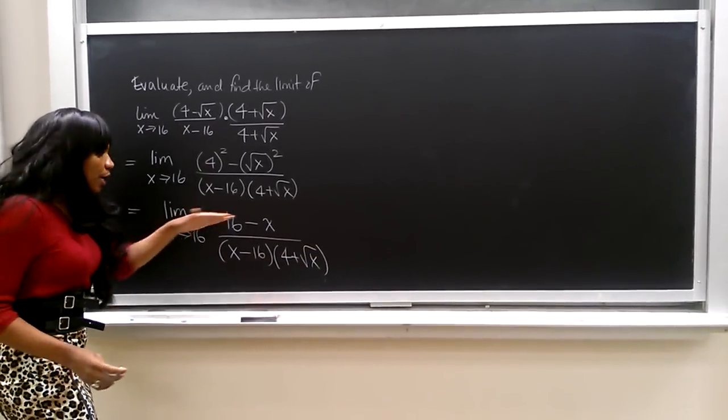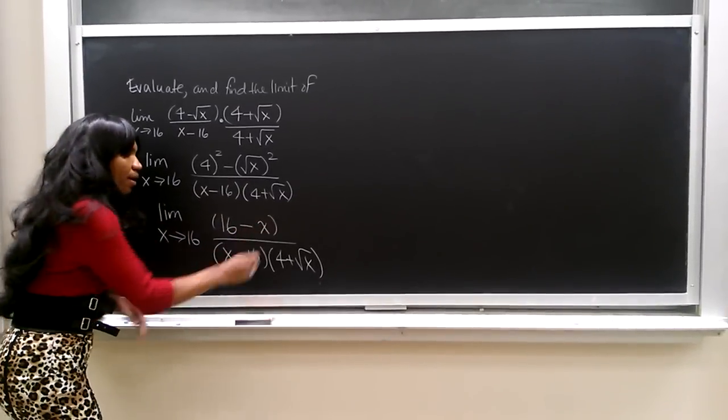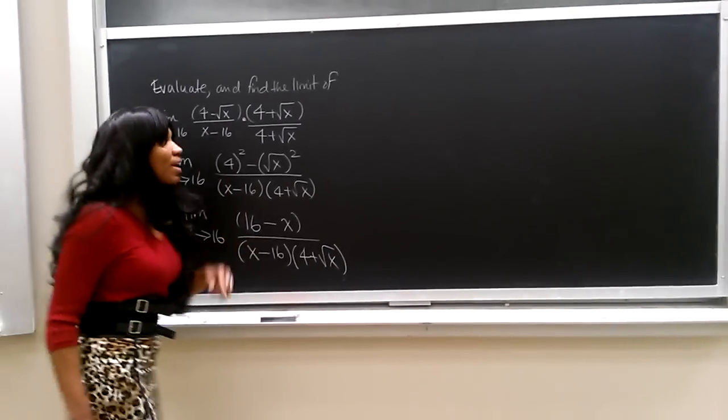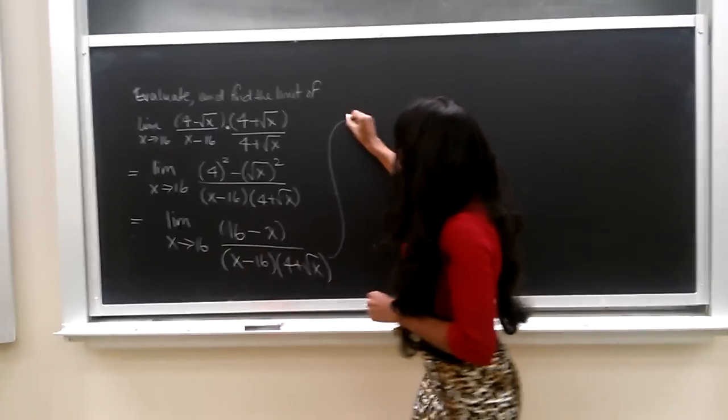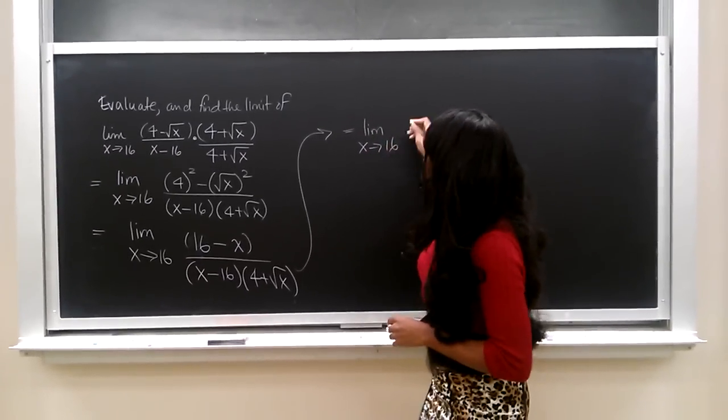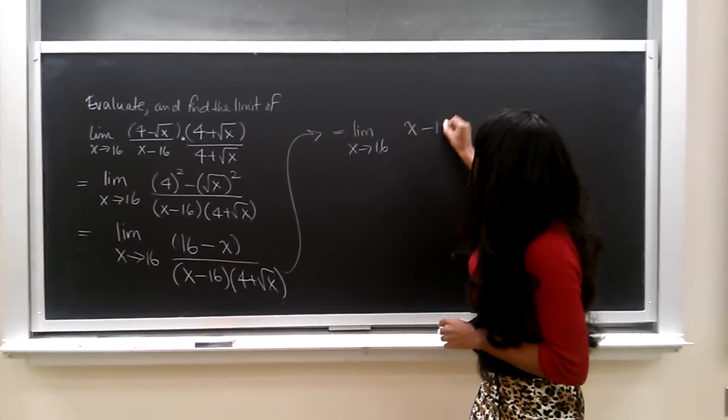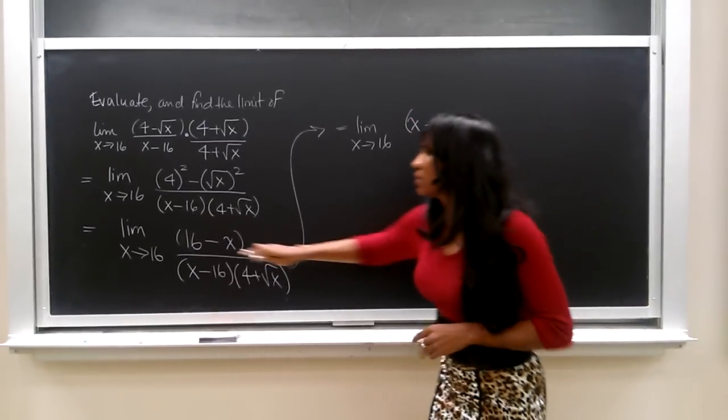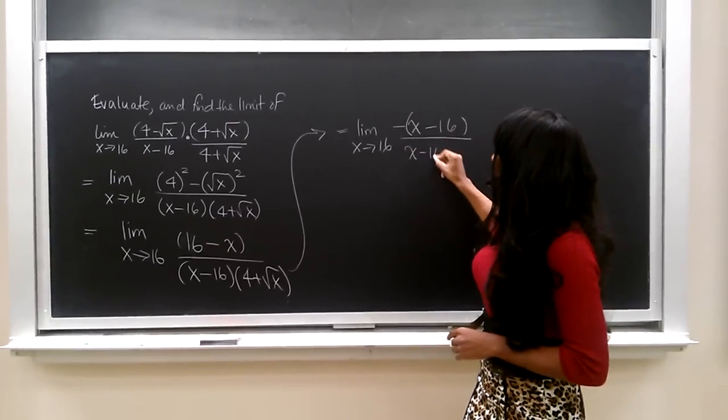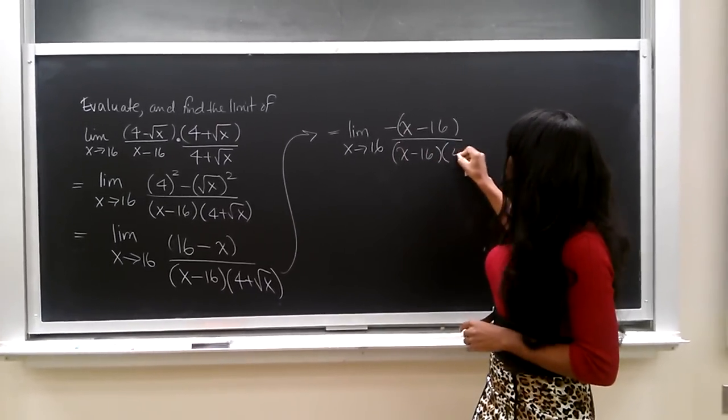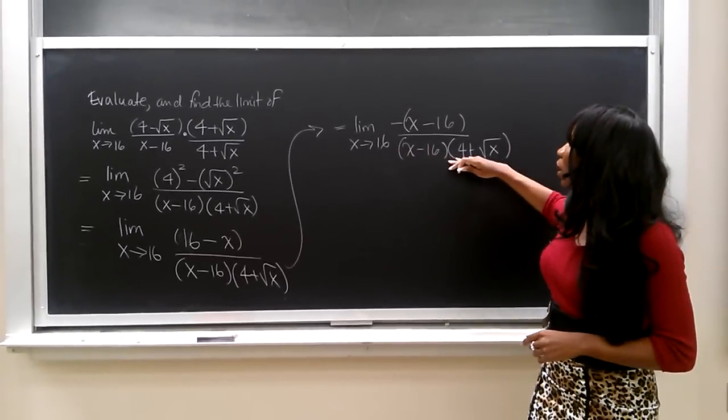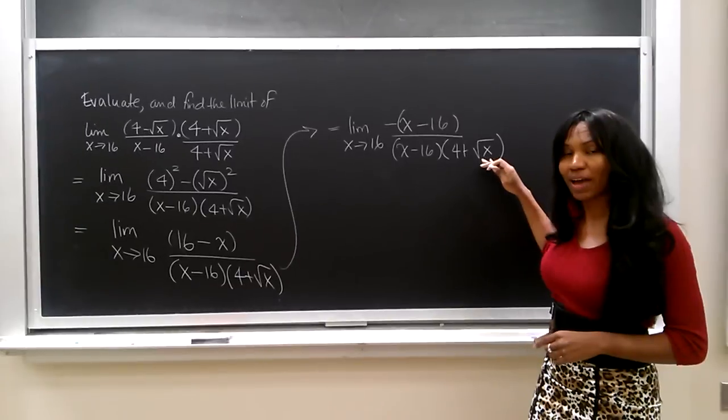This is a great thing. Here, we can eventually cancel out these quantities, but we have to do it by first recognizing that x minus 16 is the exact same as 16 minus x, but with a negative sign. And in our denominator, we still have x minus 16 times the quantity 4 plus the square root of x.